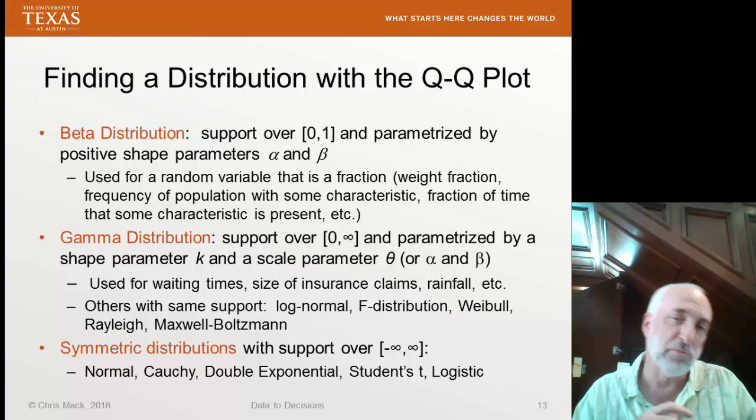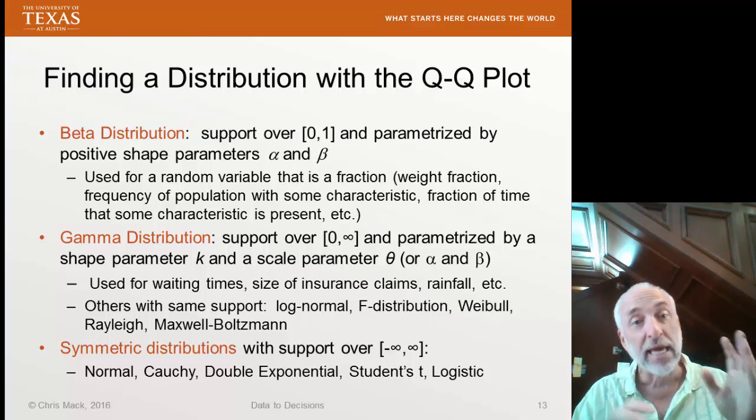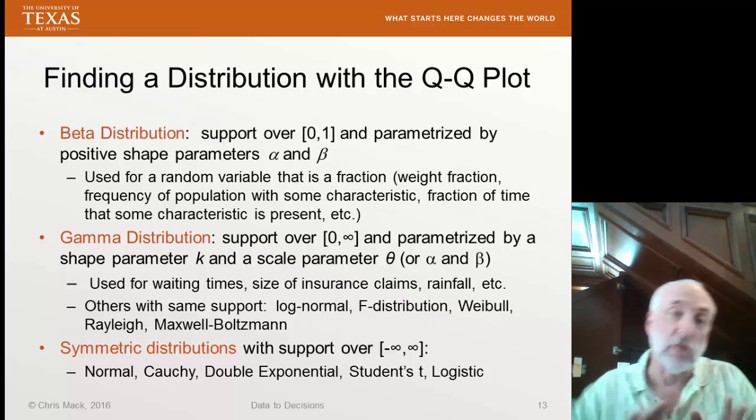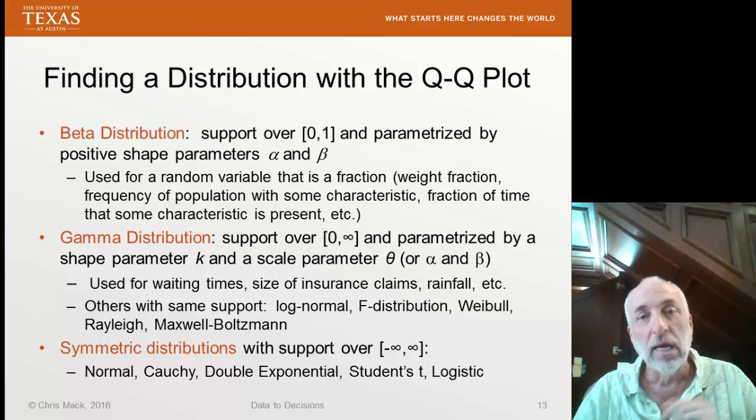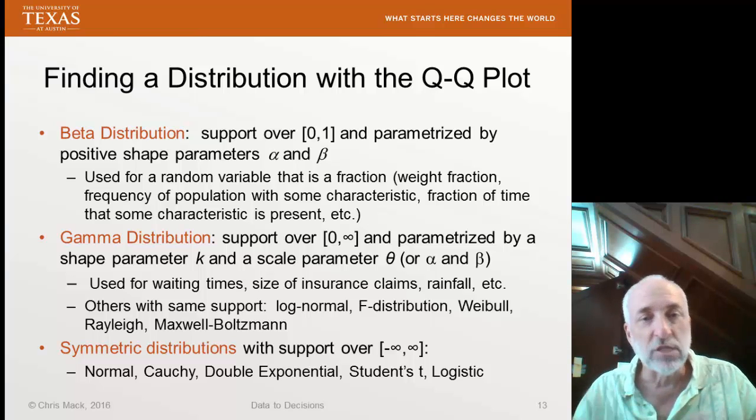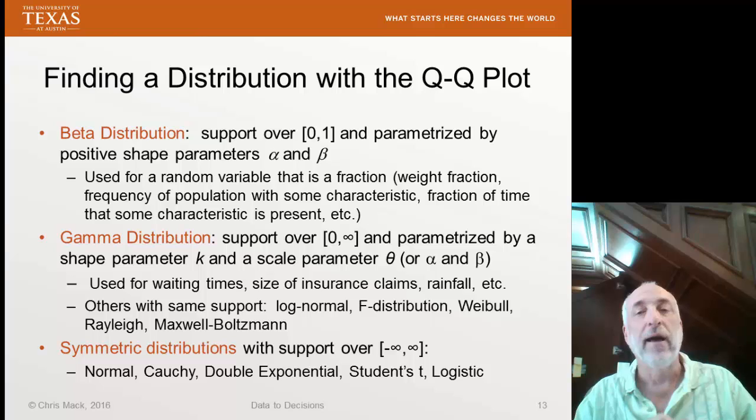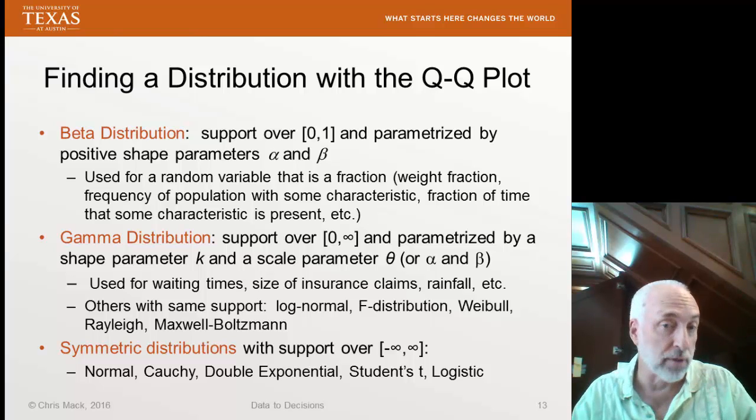The gamma distribution is a good general distribution. It has two parameters, either parameterized as k and theta or alpha and beta. It goes from zero to infinity. So it goes to infinity on one side, but it has a lower limit. And again, you can make this distribution more or less symmetric and more or less skewed, depending on the value of the parameters.